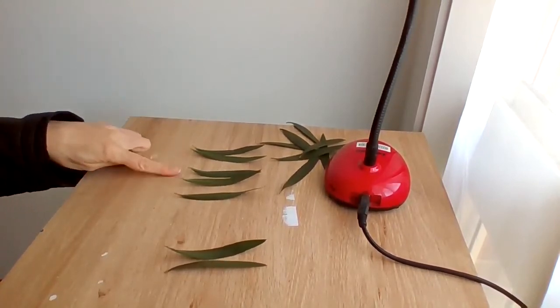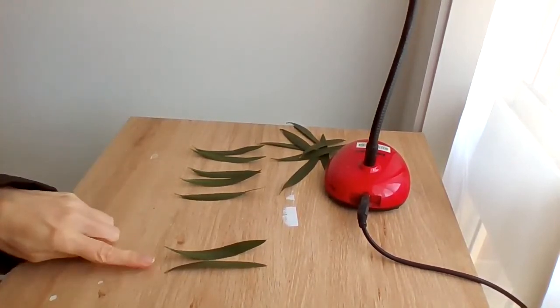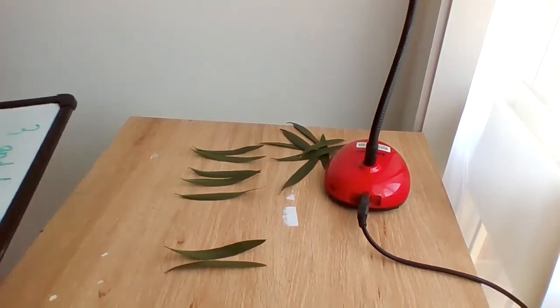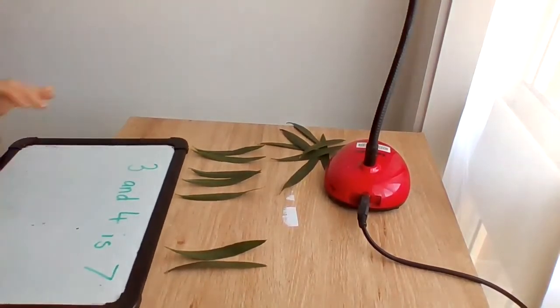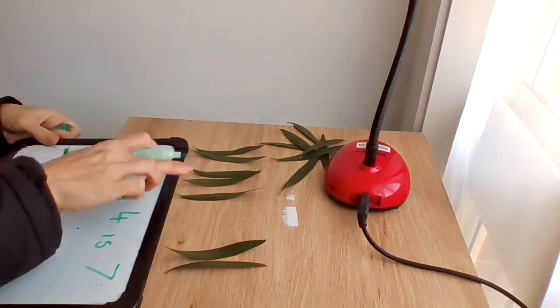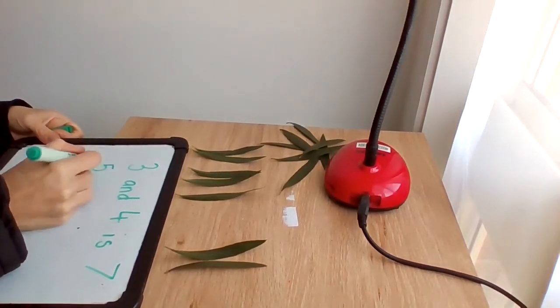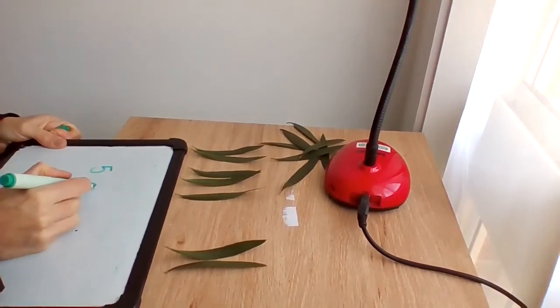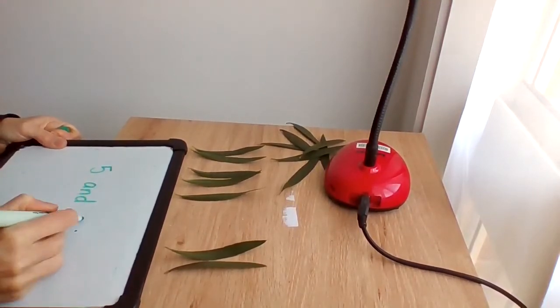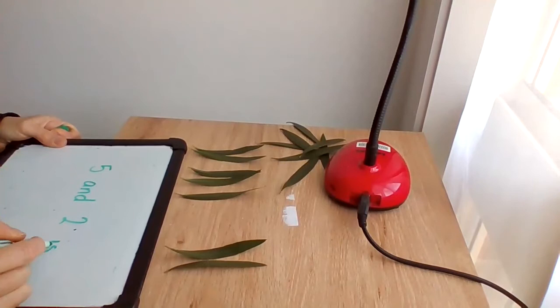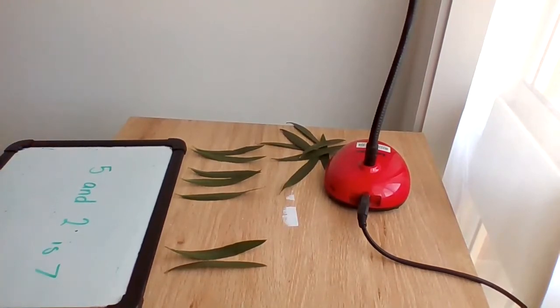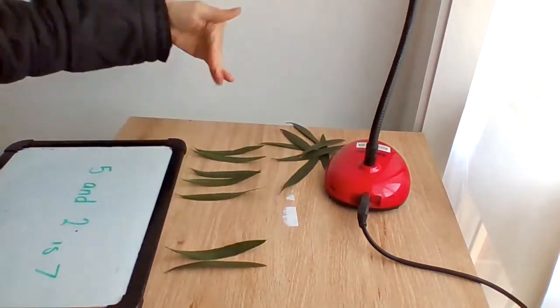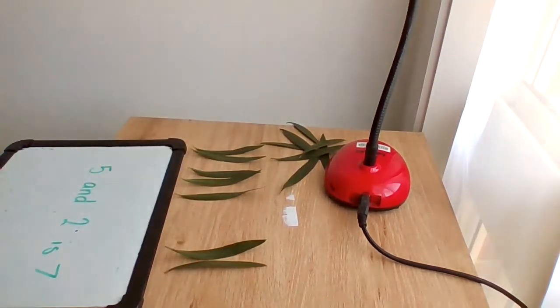Let's count them. One, two, three, four, five, six, seven. Okay, and my number sentence would be that five, I'll get rid of my last one. And two is seven. And you can see that here. I've got five and two and all together I have seven.